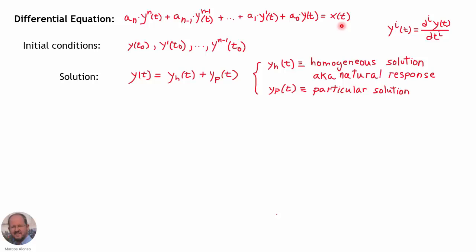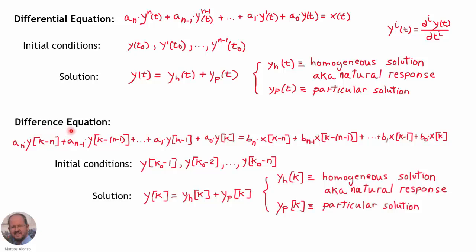We know that in order to solve the differential equation we need several initial conditions, and that the solution is given by the addition of two solutions: y sub h of t, which is the homogeneous solution, also known as the natural response, and y sub p, which is the particular solution of the differential equation.